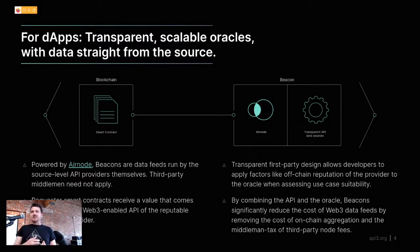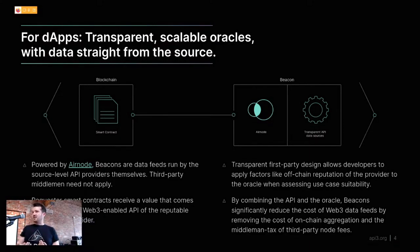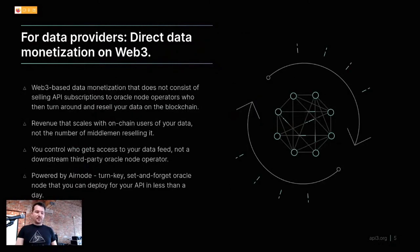This is done without compromising security. With third-party nodes there is a potential Sybil attack risk, whereas with the API provider itself that risk isn't present. For data providers, beacons offer a way to monetize their data directly to Web3 without needing any API subscription through third-party node operators.